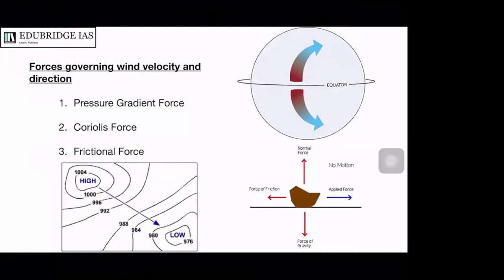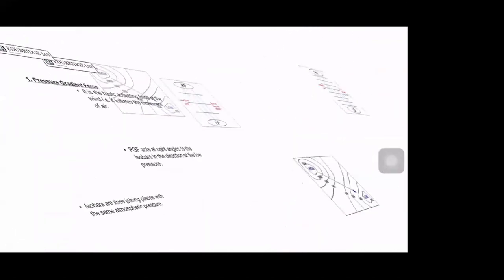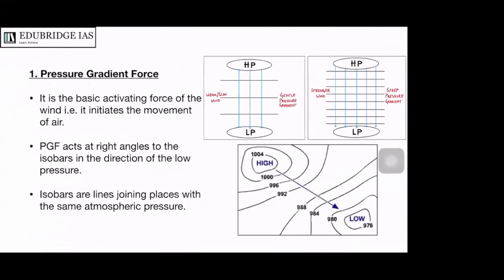Now we have to look at the forces which govern the wind's velocity and direction. The speed and direction of wind is governed by three forces: the pressure gradient force, the Coriolis force, and the force of friction. First, the pressure gradient force (PGF) is the force produced by differences in air pressure between two locations and is responsible for the flow of air from an area of high pressure into an area of low pressure. It is the basic activating force of wind.